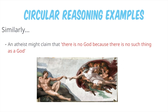Similarly, an atheist might say, there is no God because no such thing as God exists. This would be another form of circular reasoning. If we were to ask again how they knew that God didn't exist, they might respond, because there is no God.